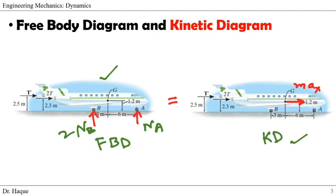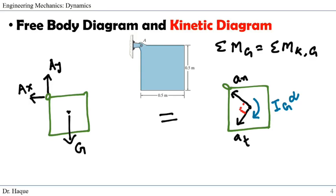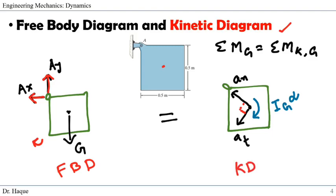Here is another example: a plate pinned at point A, so it can rotate about that point. Since the only force acting on the body is gravity, the free body diagram has a reaction in the y-direction and a reaction in the x-direction at the pin, with weight acting downward at the mass center G. We understand that this force will cause the plate to rotate in the clockwise direction. Using the moment equation for planar rigid body motion, moment about any point Z equals the kinetic moment about Z.